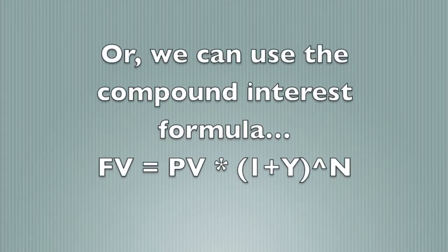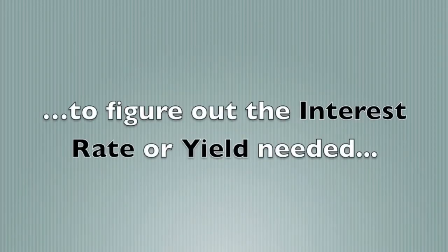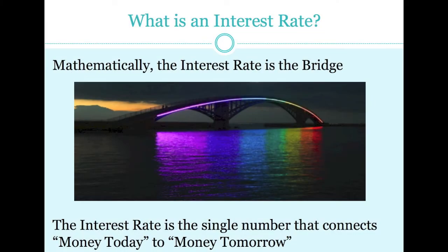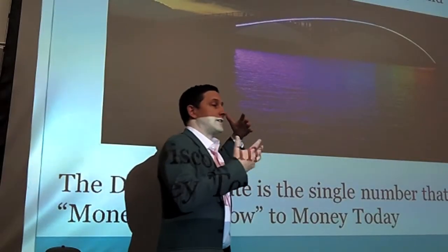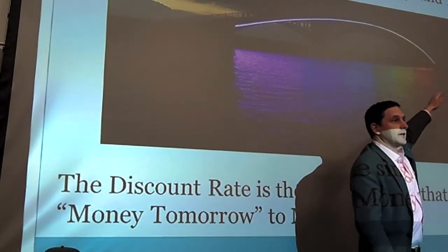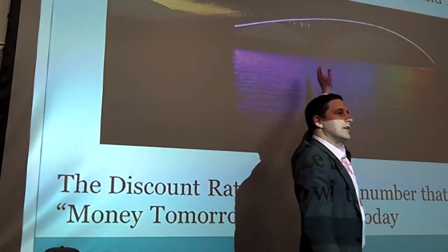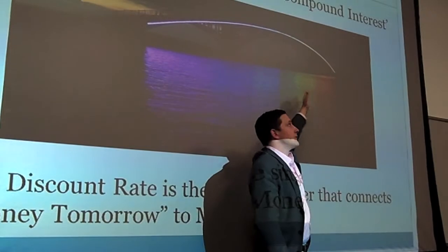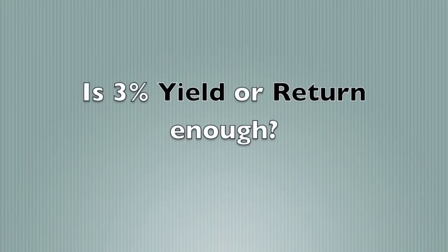We also use the compound interest formula to figure out an interest rate or yield. There are three parts to the compound interest formula: money today on the left of the bridge, the yield or annual return — that's the rainbow part — and the money in the future on the right side of the bridge. It can also tell us: if I have this much money and I know I'm going to have that much money, what's the return I need? Is it okay earning a three percent return? Compound interest tells us the return needed to get from here to there.